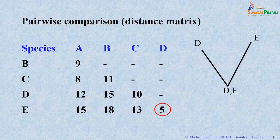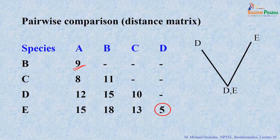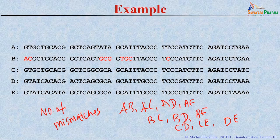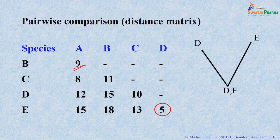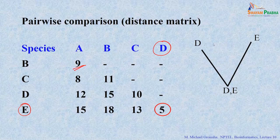From this, we infer that D and E are closest to each other. We make the first branch and first node — D and E share a common ancestor. Next, we combine D and E with all other species A, B, and C by taking averages. For A: (AD + AE) / 2 = (12 + 15) / 2 = 13.5. For B: (BD + BE) / 2 = 16.5. For C: (CD + CE) / 2 = 11.5.